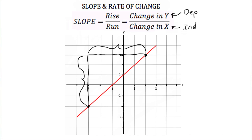Here, we rose five and we ran five to the right. So our slope is simply five over five, or the slope of this line is one.